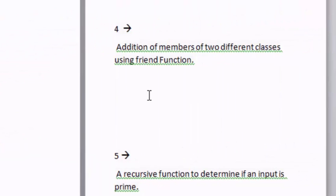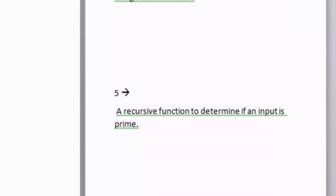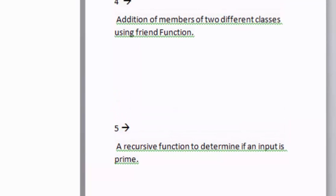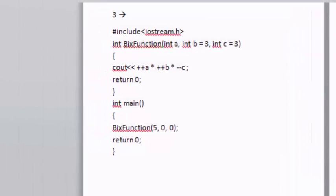This is the third question. I want the output of the third question also. Then this is the fourth question: addition of the members of two different classes using friend function. Don't forget the friend function. If you don't know friend function, then see the tutorial.